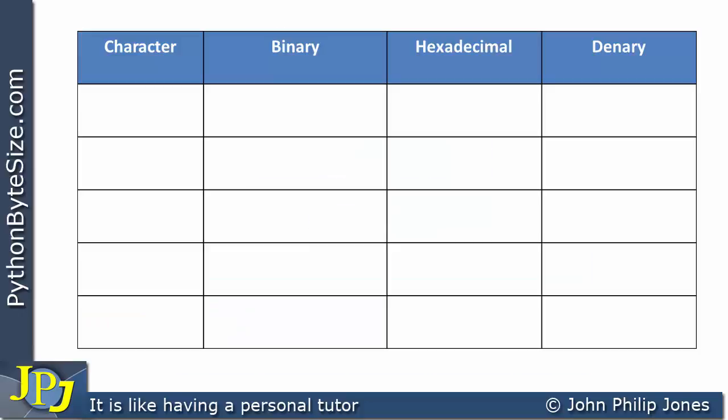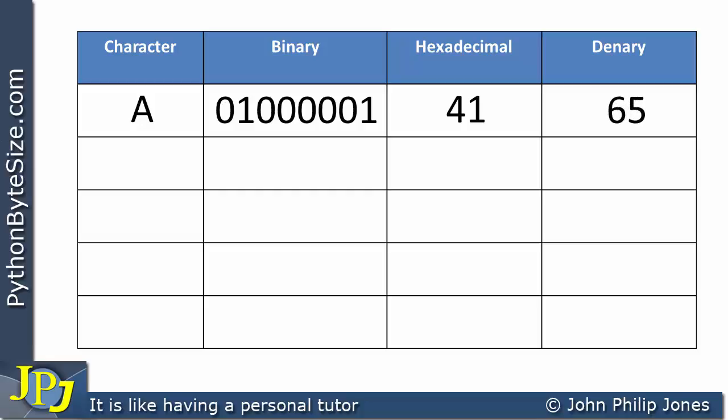Let's consider this code by looking at this table, which has four columns. The first column is the character column — we're looking at uppercase A. It has a binary pattern as shown here. Within computing, it is usual for humans to remember binary patterns using hexadecimal numbers, and the hexadecimal number for this binary pattern is 41. If we look at this binary pattern in our decimal number system, it has the number 65.